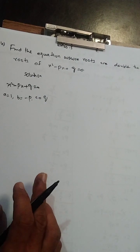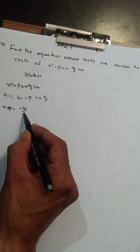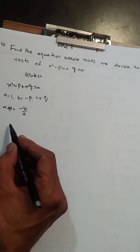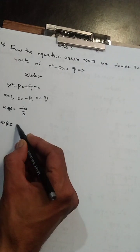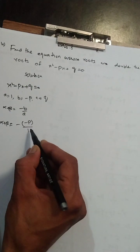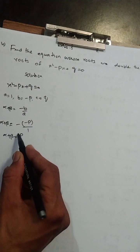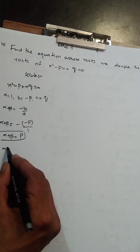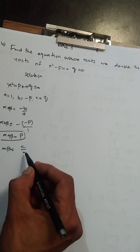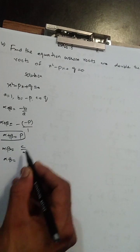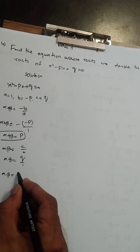Sum of roots alpha + beta ka formula hai minus b upon a. B ki jagah -p aur a ki jagah 1 rakhenge: minus × minus = plus, so alpha + beta = p. Product of roots ka formula hai c upon a: c ki jagah q aur a ki jagah 1, so alpha × beta = q.